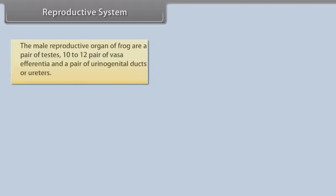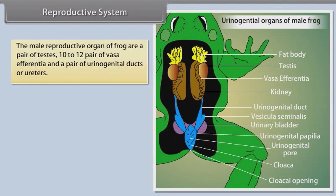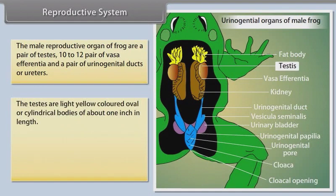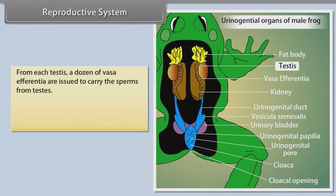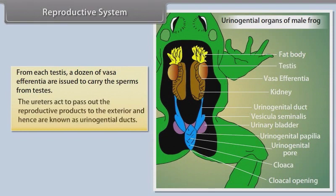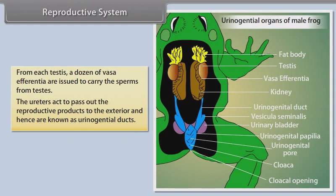The male reproductive organs of the frog are a pair of testes, 10 to 12 pairs of vasa efferentia, and a pair of urinogenital ducts or ureters. The testes are light yellow-coloured, oval or cylindrical bodies of about one inch in length, attached to the ventral surface of the kidney at the anterior end by a fold of peritoneum known as the mesorchium. From each testis, a dozen vasa efferentia carry sperm from the testes. The ureters also act to pass out the reproductive products to the exterior and are hence known as urinogenital ducts.